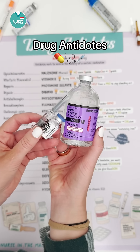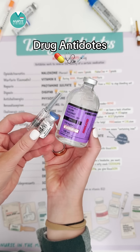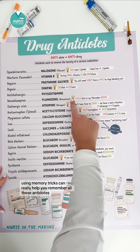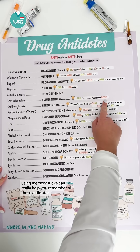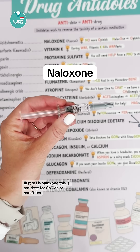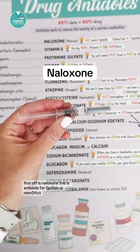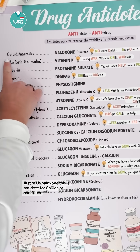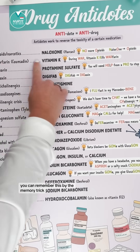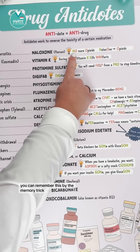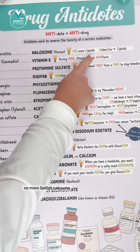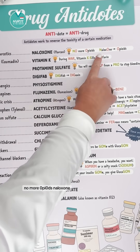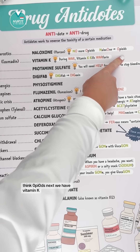Let's talk about some common NCLEX antidotes. Using memory tricks can really help you remember all these antidotes. First off is naloxone. This is the antidote for opioids or narcotics. You can remember this by the memory trick: 'no more opioids' — naloxone, think opioids.